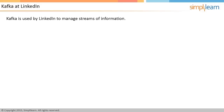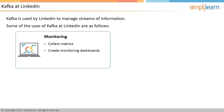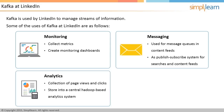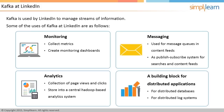LinkedIn (www.linkedin.com), the largest network of professionals, is the originator of Kafka. Kafka is used by LinkedIn to manage streams of information. Uses include monitoring — collecting metrics from various systems to create monitoring dashboards; messaging — as message queues for content feeds and as a publish-subscribe system for searches; analytics — collecting page views and clicks from customer-facing websites and storing information into a central Hadoop-based analytics system; and as a building block for distributed applications, distributed databases, and distributed log systems.